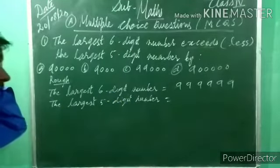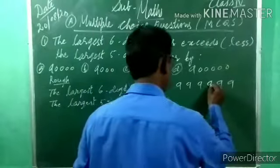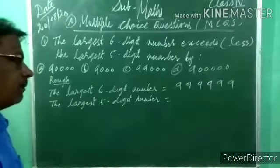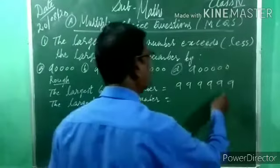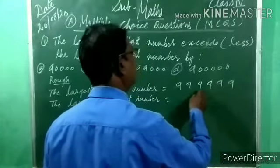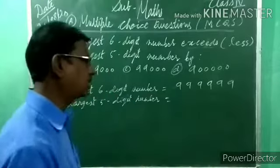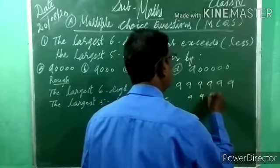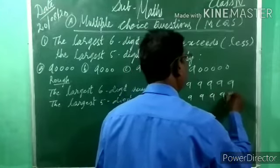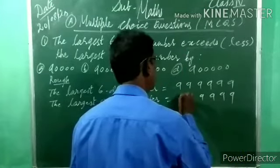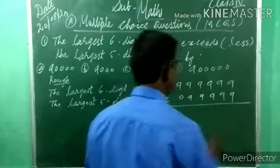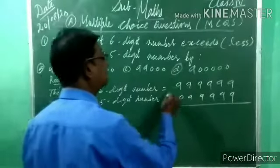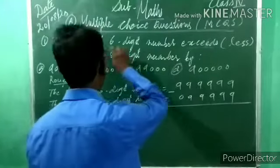The largest five-digit number means nine repeated five times: ninety-nine thousand nine hundred ninety-nine (99,999). Now 'exceed' means we subtract — the largest six-digit number minus the largest five-digit number.